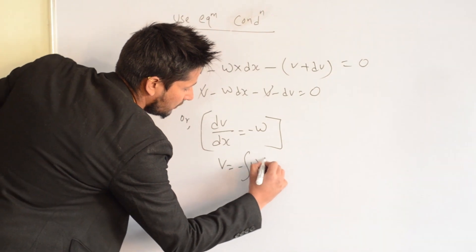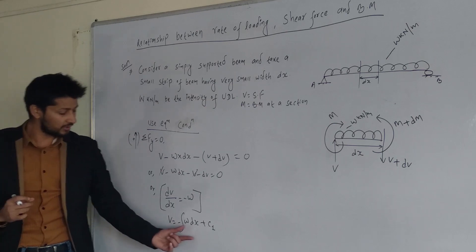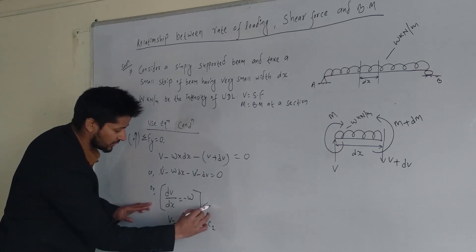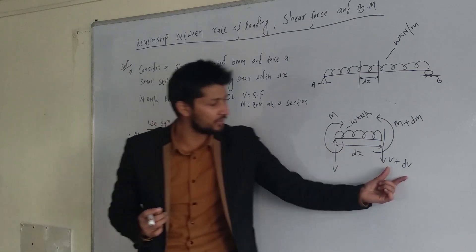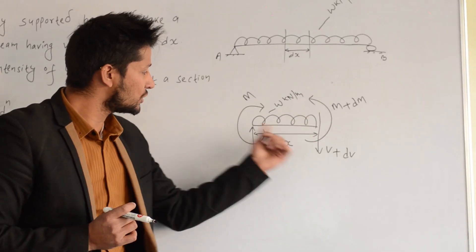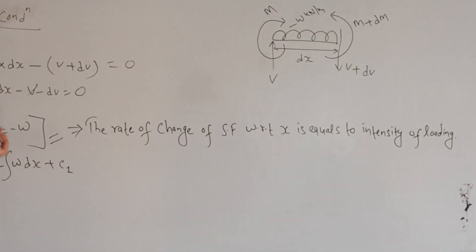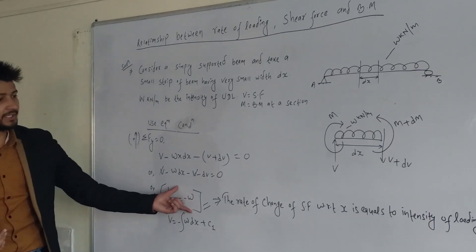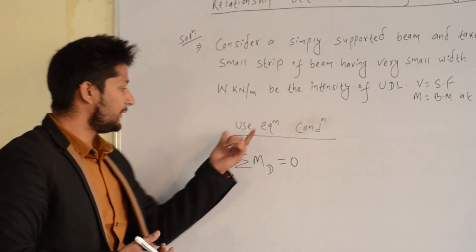We can write V = ∫(−w)dx + C1. What this means is that the change in shear force equals the area under the load diagram. So dV/dx = −w (the intensity of load), and the change in shear force equals w·dx over a small element.